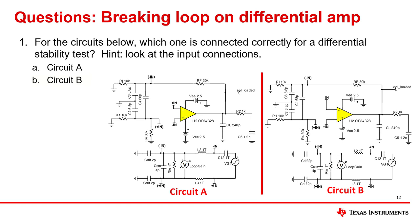The correct answer is B. Looking at circuit A, you can see that the inverting input of the amplifier is connected to plus N and the non-inverting input is connected to minus N.